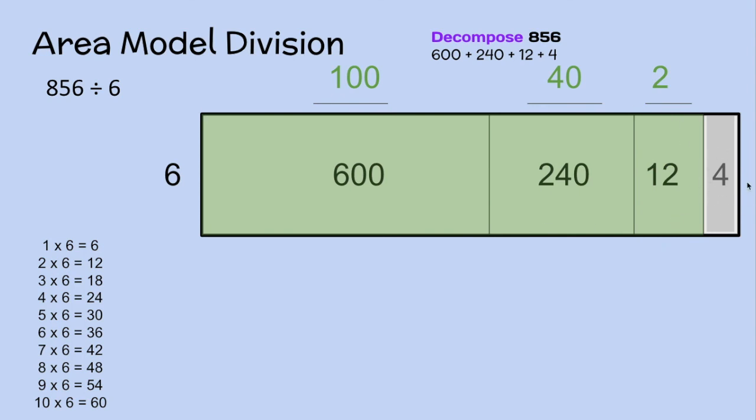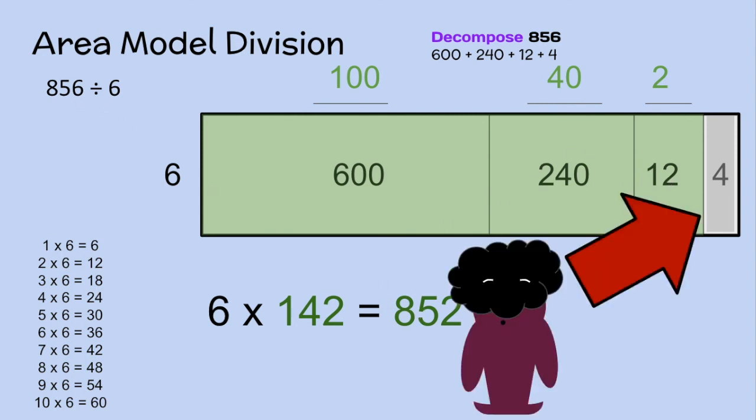This 4 was never accounted for, and again, we're going to come back to that in just a second. But if we look at this, 6 times 142 is going to give us this section right here, which is 852. 600 plus 240 plus 12 is 852. That's not our dividend. This is where that 4 comes in. We have a remainder of 4. This is what we know as a remainder. Our real answer is 142 with a remainder of 4.